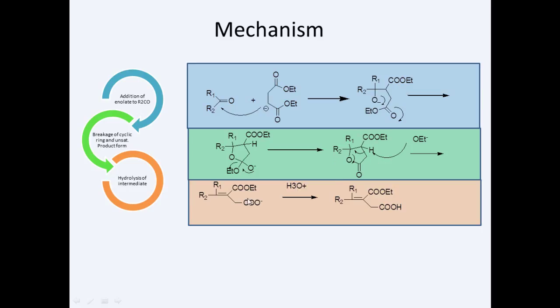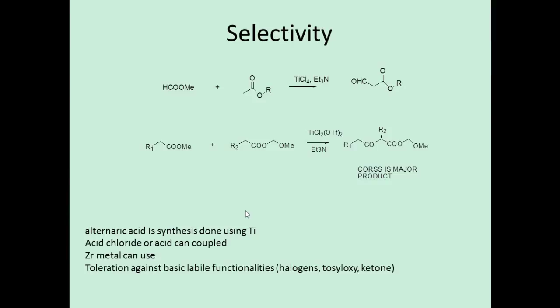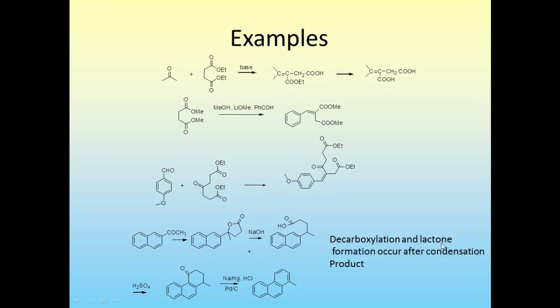This is an example: aliphatic ketones with diester and base, giving further hydrolysis of the ester groups. Benzaldehyde is important - you can see the ester and keto groups generated. The important reaction is decarboxylation and lactone formation after the condensation product.